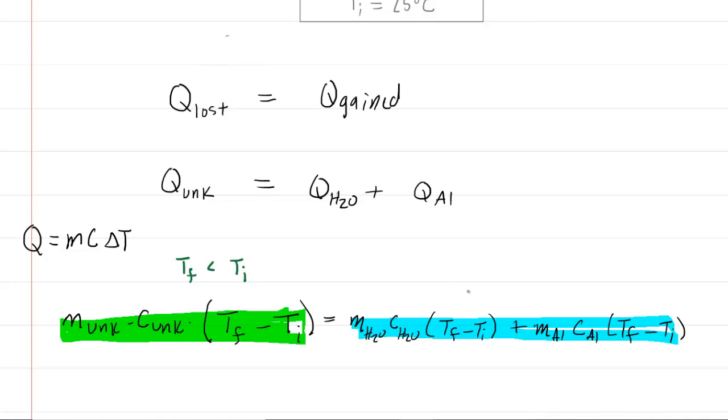On the other hand, the water and aluminum are warming up, they're gaining heat energy. So their final temperatures will be larger than their initial temperatures. And therefore, when we subtract, we would end up with positive results there.